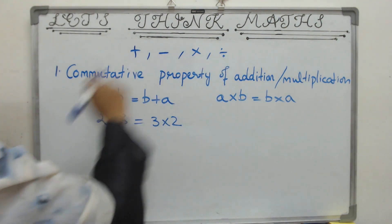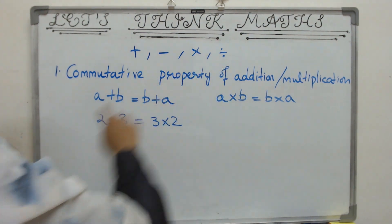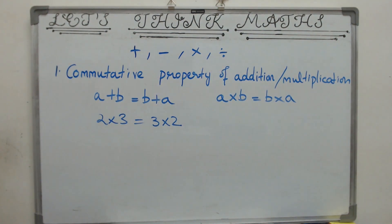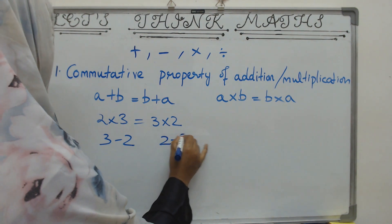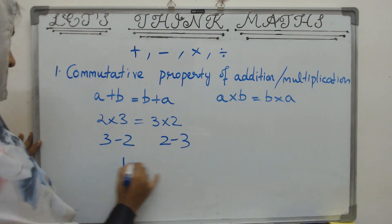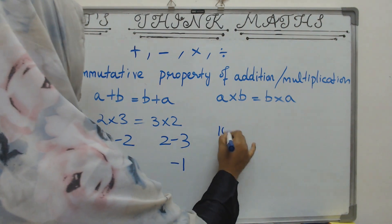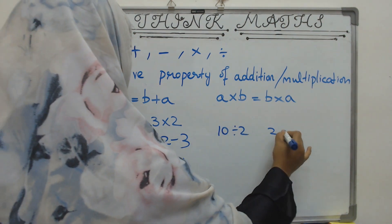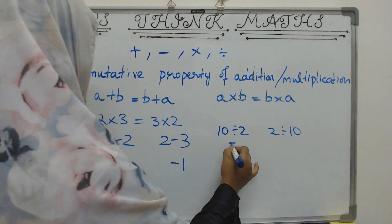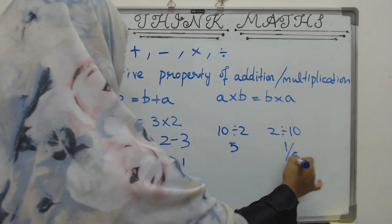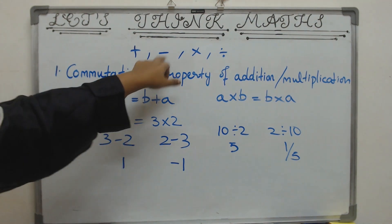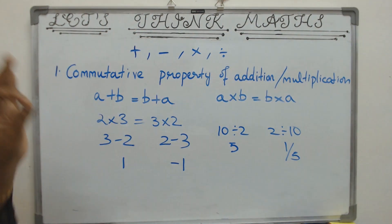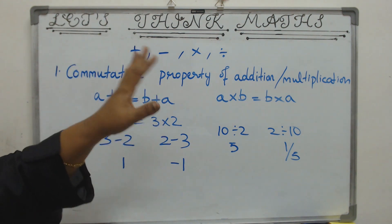What about subtraction and division? Are they not commutative? Yes, they are not commutative. We will see with an example: 3 minus 2 and 2 minus 3 are not the same — this is 1 and this is minus 1. And 10 divided by 2 and 2 divided by 10 are not the same — this is 5 and this is 1 by 5. The order affects subtraction and division, but it does not affect addition and multiplication.